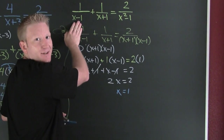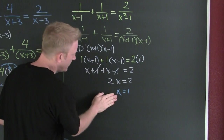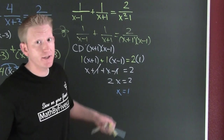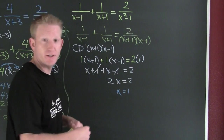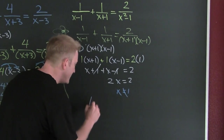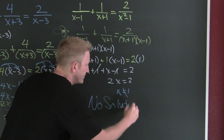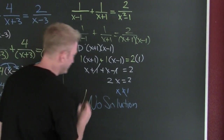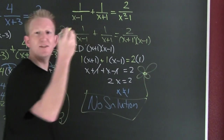But wait — you're not done. You have to check it. Here's why: I plug X equals one in there. What does it do to that denominator? One minus one is zero. And you can never divide by zero — that's a domain restriction. X equals one, you are not a solution. What is the solution? There is no solution.